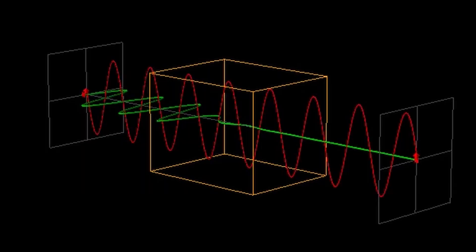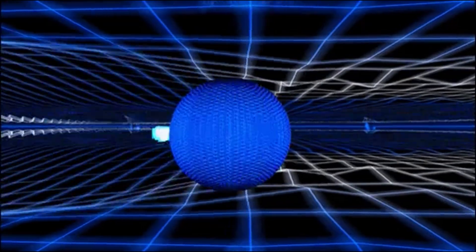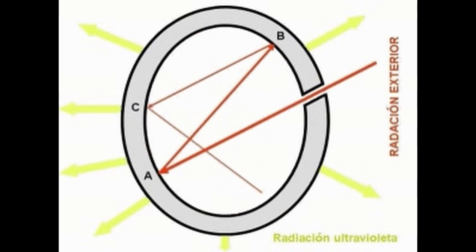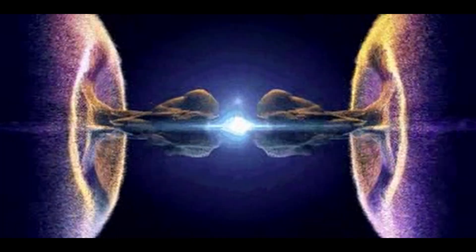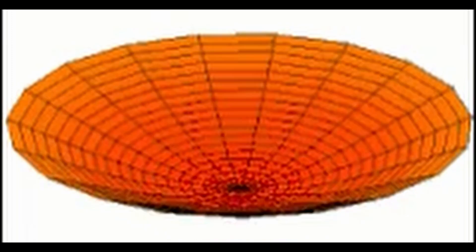Dimensional analysis can also be used to derive formulas or convert units by using the principle of dimensional homogeneity, which states that the dimensions of all terms in an equation must be the same. For example, if we want to convert miles per hour (MPH) to meters per second (m/s), we can write MPH = L/T and m/s = L/T. Since the dimensions are the same, we can equate the units and solve for the conversion factor.